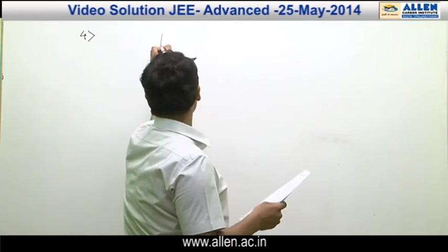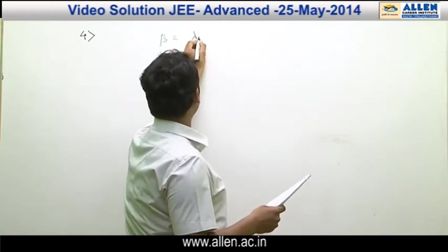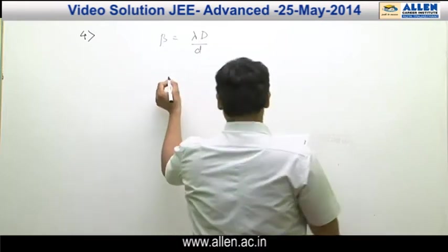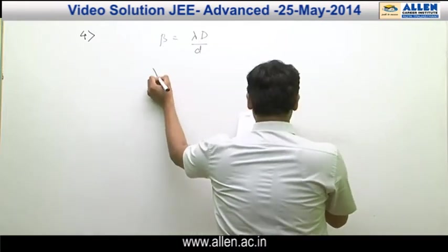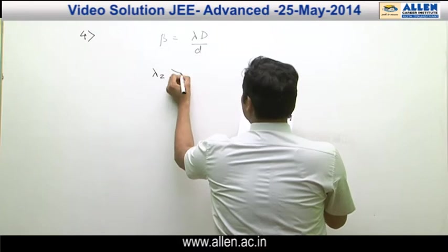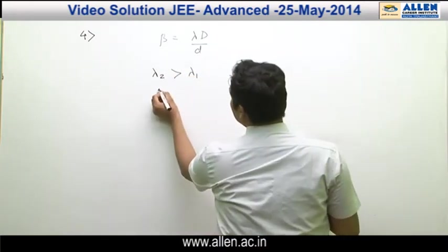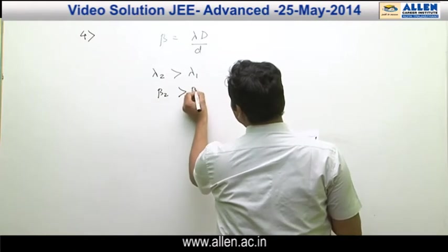We know that fringe width beta is equal to lambda capital D divided by small d. Here lambda 2 is greater than lambda 1. Therefore, beta 2 must be greater than beta 1.